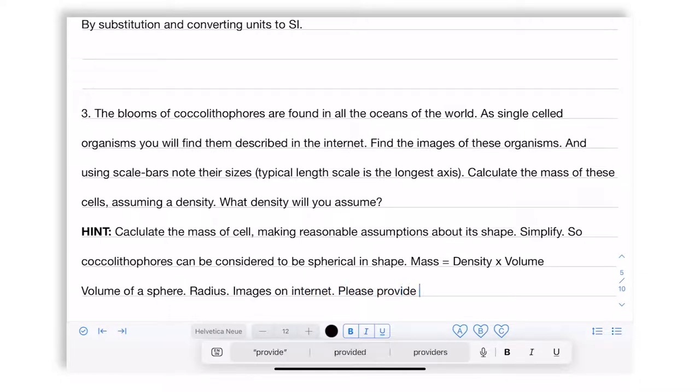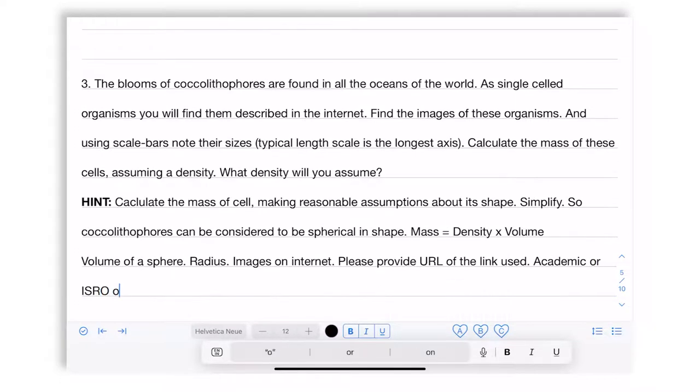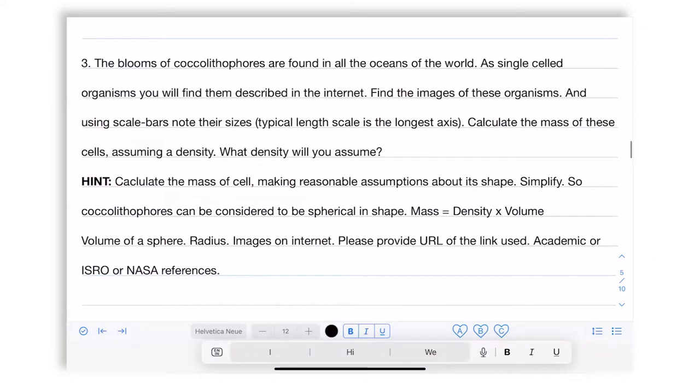Please provide URL of the link used. Remember, you will find all kinds of references. Try to find academic or ISRO or NASA references. Not any other. So think about this. How you will go about finding the size of each individual coccolithophore single cell in terms of its length and in terms of its mass. With that, I end this section.